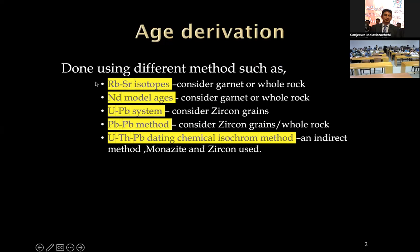We have several methods used in geochronology in Sri Lanka. As I mentioned, rubidium-strontium isotopes have been used — people have used garnet and also whole rock composition. I am just introducing the methods now. There is another method called neodymium model ages, for which mainly whole rocks are used, though sometimes garnet can also be used.